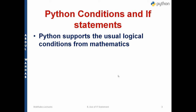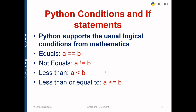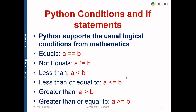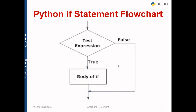Python supports some logical conditions from mathematics. If we want to check whether two variables a and b are exactly equal, we use a double equal sign: a == b. For not equal, we have a != b. If we want to check if a is less than b, we use the less-than sign. For less than or equal to, we use <=. We also have a greater-than sign and greater than or equal to. These are commonly used conditions for the if statement in Python.